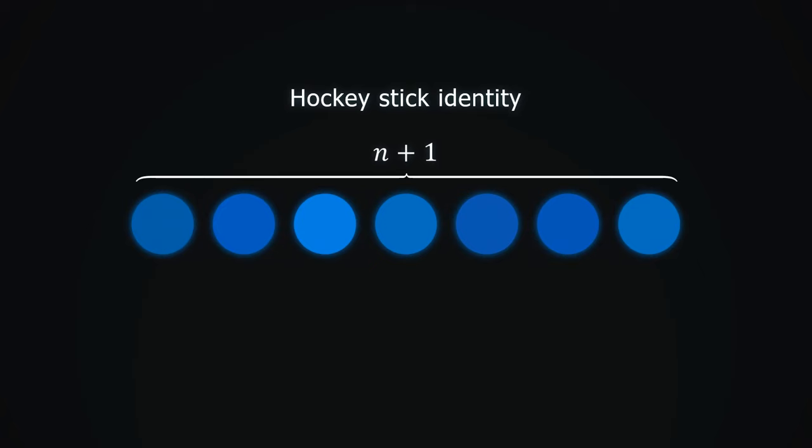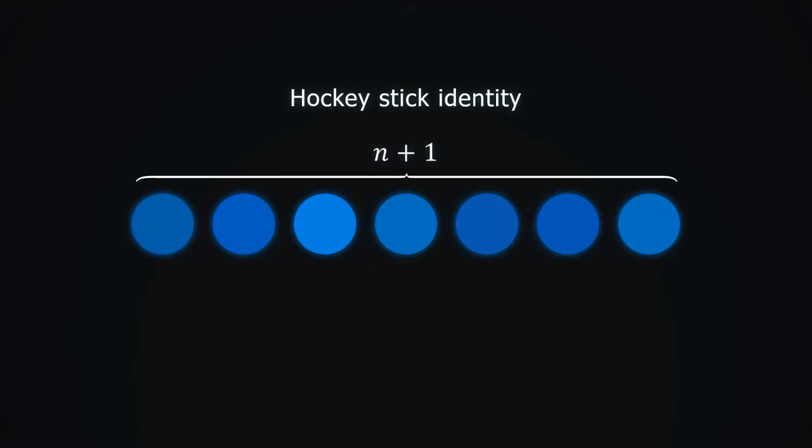Again, we have a row of different objects, this time n plus 1 of them. We want to choose 4 of them. There are n plus 1 choose 4 ways to do this, by definition. To be more suggestive, we will write 4 as 3 plus 1. Now let's count this differently. Color the rightmost object we will choose with red.